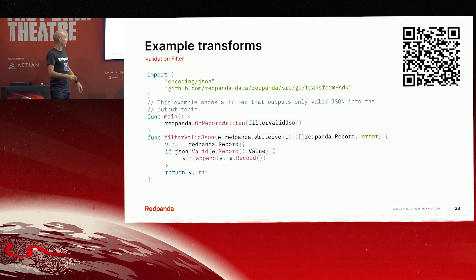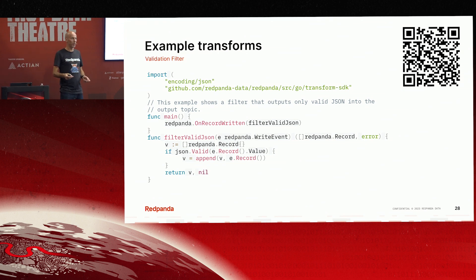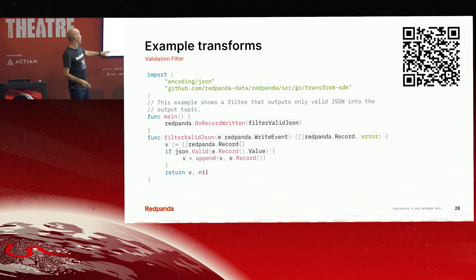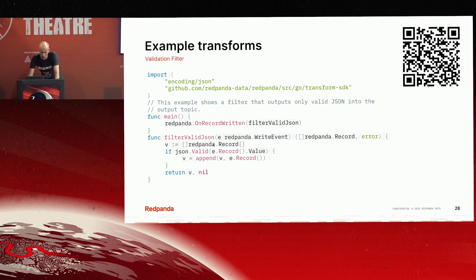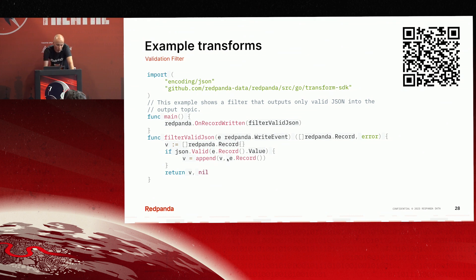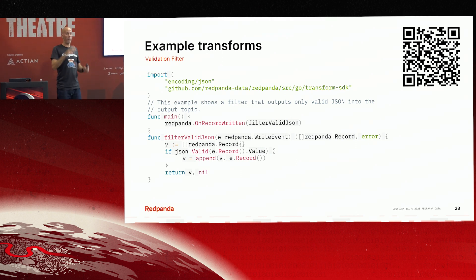A slightly more complicated example: this one validates our JSON. We've got JSON coming into a topic, but stuff happens on the wire — you can end up with invalid JSON. A common problem in Kafka environments is poison messages: a message that can't be processed causes everything behind it to get stuck. What we do here is take the input record, run it through json.Valid — if it is valid we append it to our output, if it's not we don't. Anything that's not valid JSON gets filtered out. Again, very very simple.